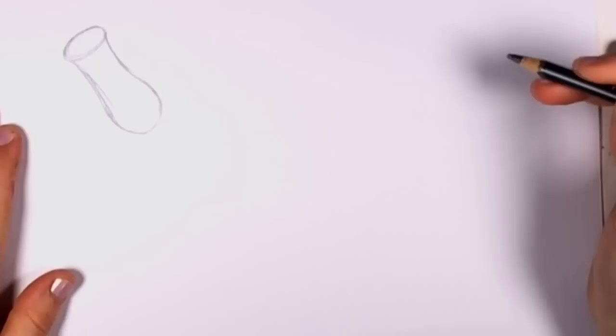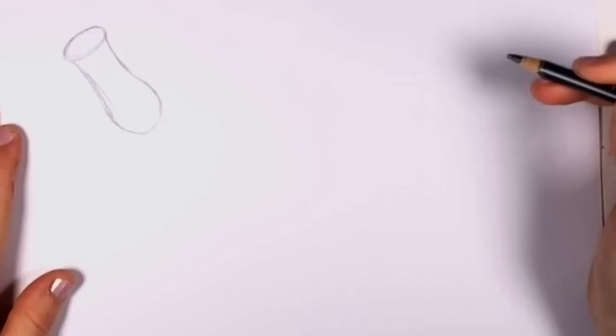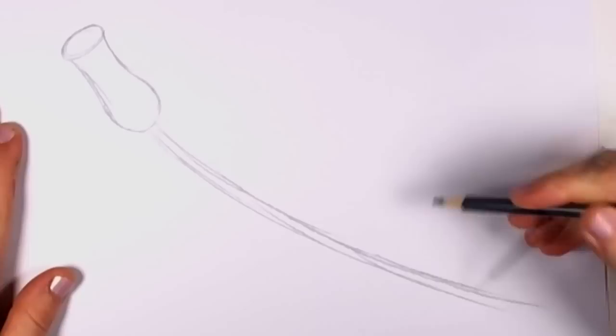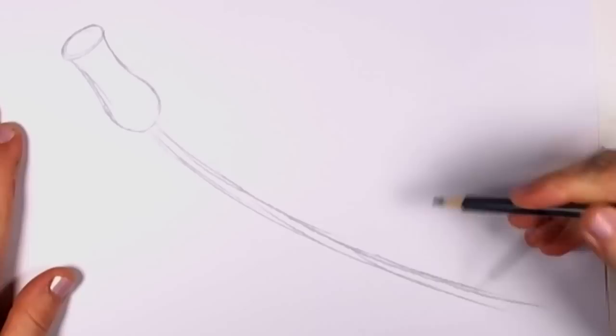Then you're going to draw the stem, which is two long sweeping lines parallel to each other, followed by a little oval shape on the end to show the cylindrical form.